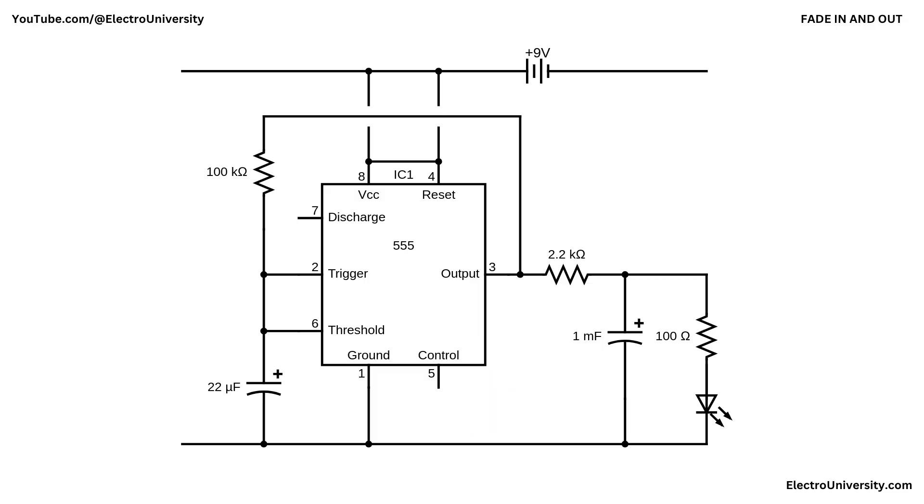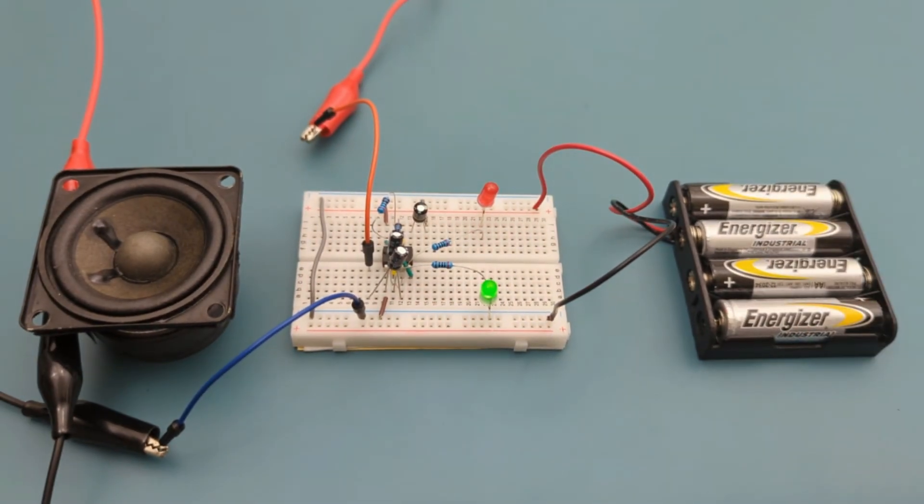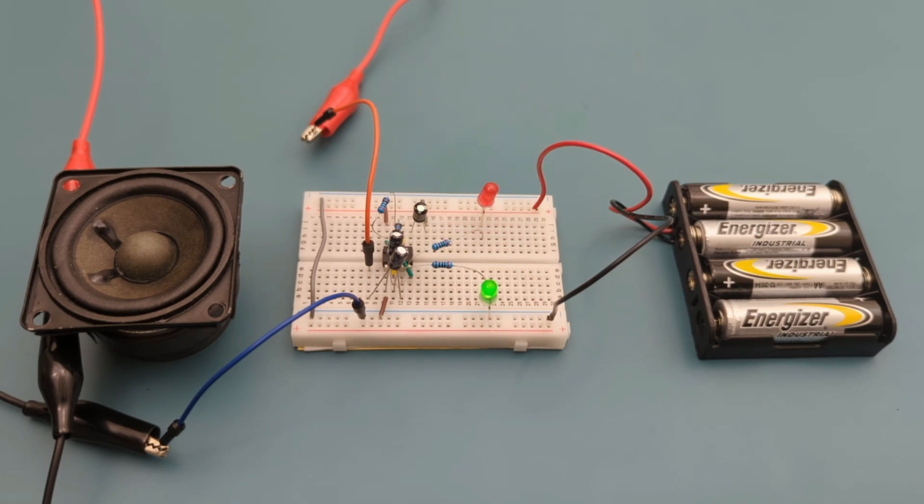I hope this video has shown you how to make a fade-in and fade-out circuit with a 555 timer IC. If you prefer to create a flashing LED effect instead of a fade-in and out effect, check out my other video. In this video, the light alternates between the green and red LEDs. There is also a buzzer sound.